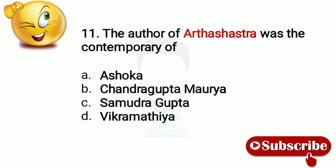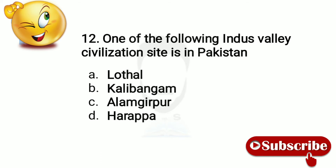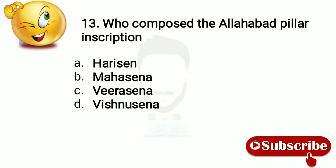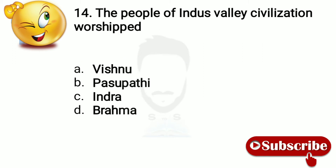Question 11: The author of Arthashastra was the contemporary of Chandragupta Maurya. Question 12: One of the following Indus Valley civilization sites is in Pakistan — Harappa. Question 13: Who composed the Allahabad pillar inscription? Harishena. Question 14: The people of Indus Valley civilization worshipped — option number B, Pasupati.